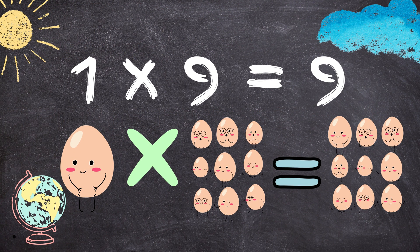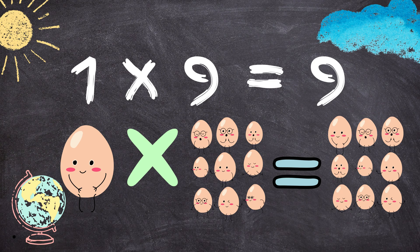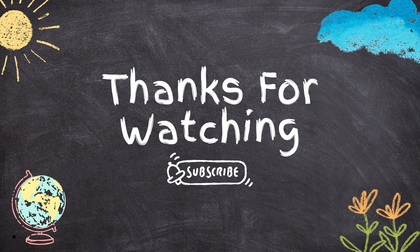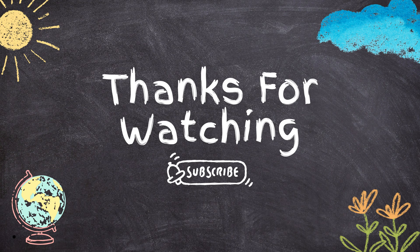1 times 9 equals 9. 1 egg multiplied by 9 eggs equals 1, 2, 3, 4, 5, 6, 7, 8, 9. Thank you for watching, and don't forget to click on the right button to subscribe for more learning adventures with Candy and Kay.